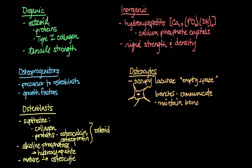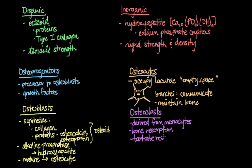The final cell type is the osteoclasts. Osteoclasts are derived from a cell line called monocytes and are responsible for bone resorption. Basically, they break bone back down again. They do this with an enzyme called tartrate-resistant acid phosphatase.